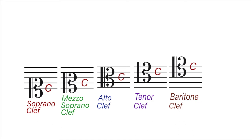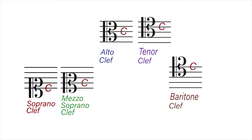Also, we mentioned the baritone clef. The basses are usually classified into two groups: the baritones, whose voices are a little higher than the basses, and the basses, whose voices are much deeper than the baritone singers. Of these five clefs, only two remain in common use today — the alto clef and the tenor clef.